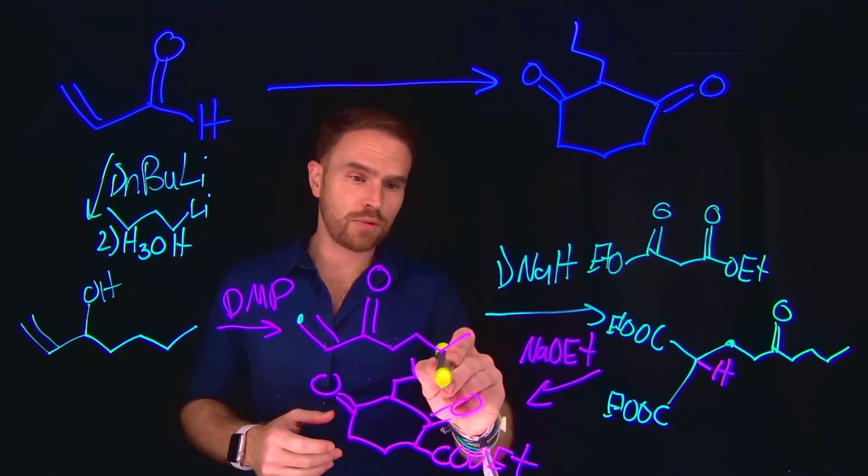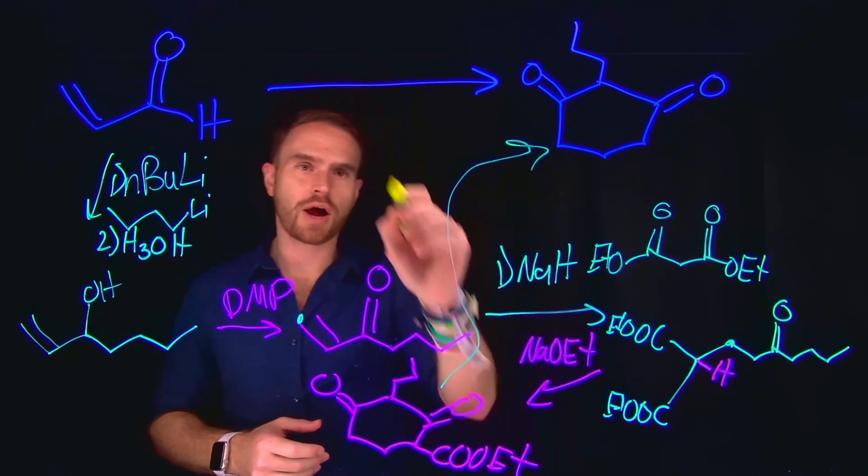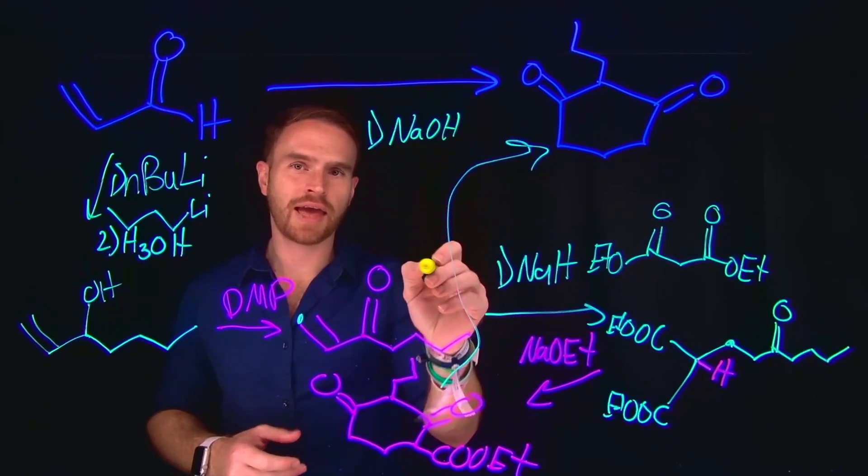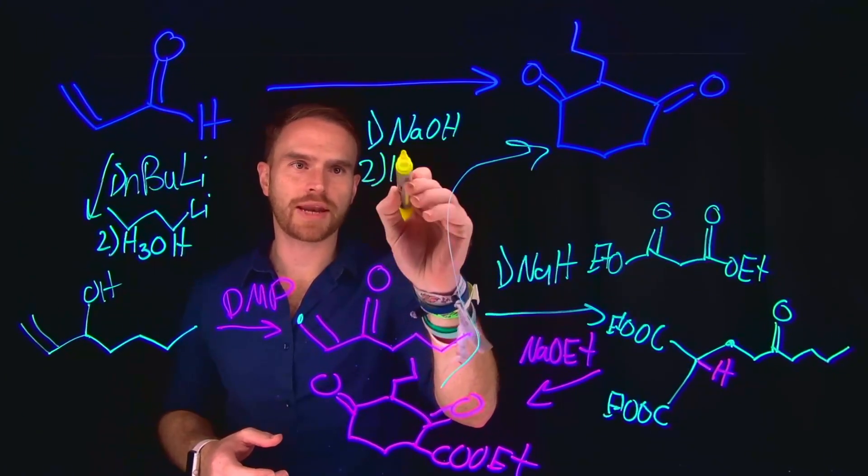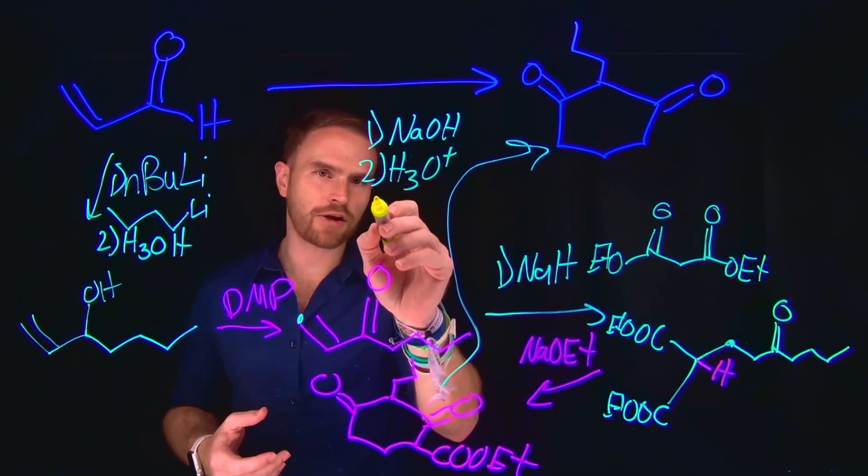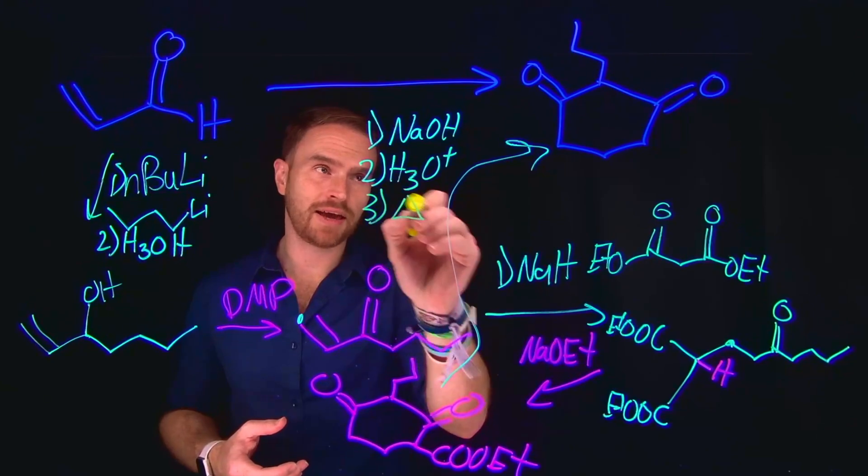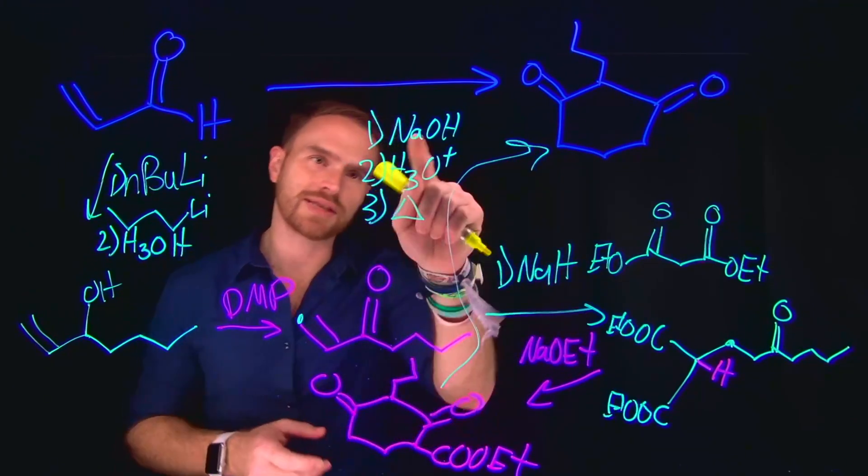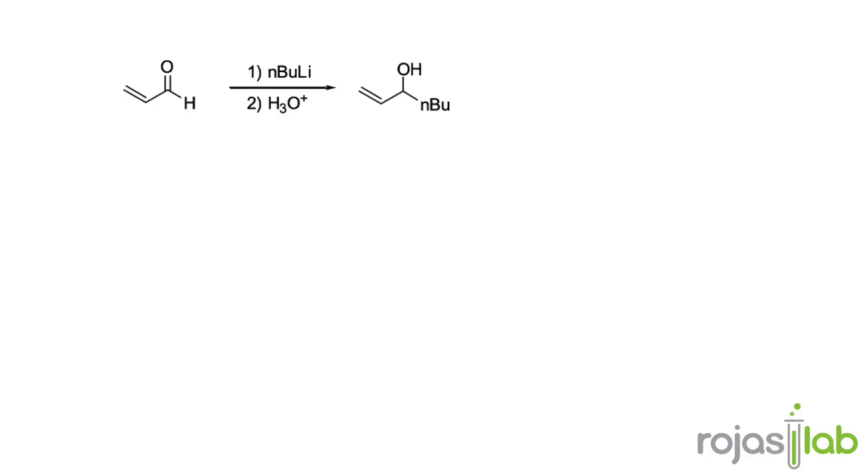And the way that we remove that ester to get to our final product is first adding a strong base like sodium hydroxide, and then subsequently working it up with an acid like H3O+, in the presence of water, and also in the presence of heat, would allow us to get to our final product. So to remove this ester, these were the conditions that got us to our final product.